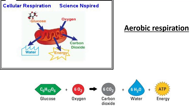Aerobic respiration happens in the mitochondria, where glucose and oxygen give you carbon dioxide plus water plus ATP. You must remember the formula: C6H12O6 + 6O2 → 6CO2 + 6H2O + ATP. The definition of aerobic respiration is: glucose is broken down to release energy in the presence of oxygen, forming carbon dioxide and water.